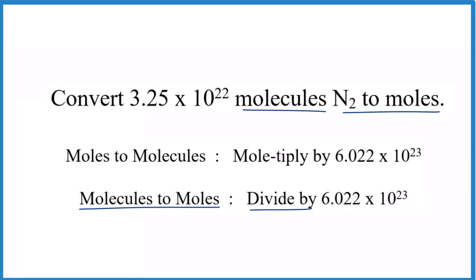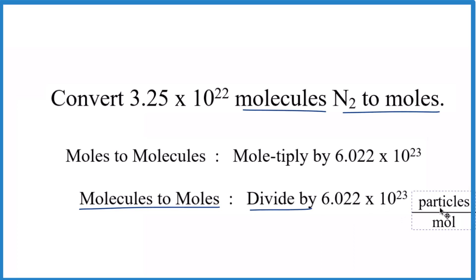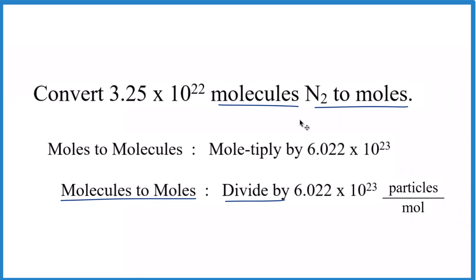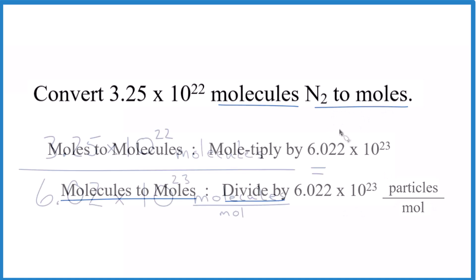We should note that the units are particles per mole. Here we have molecules — that's the particles we're talking about. So we take our 3.25 times 10 to the 22nd molecules, divide by Avogadro's number, and that'll give us moles of N2.